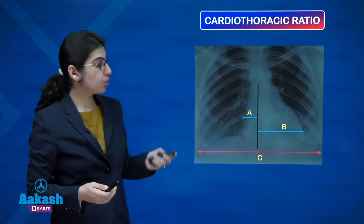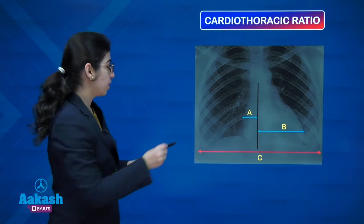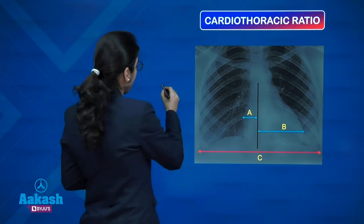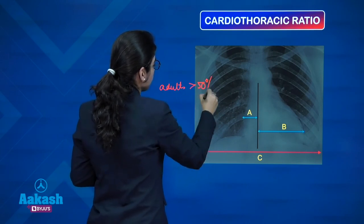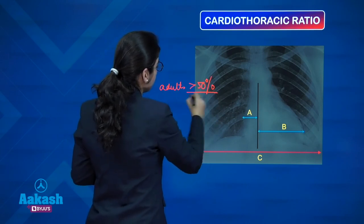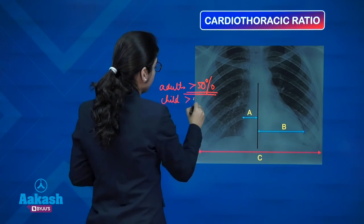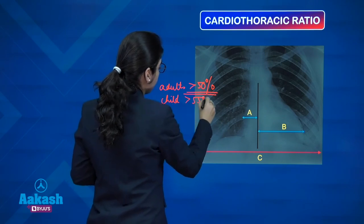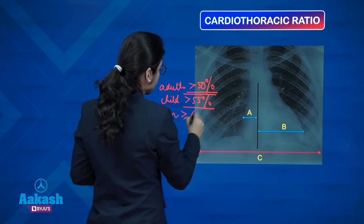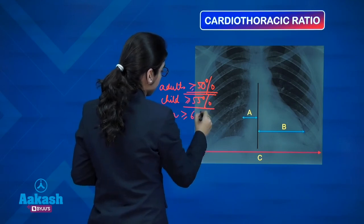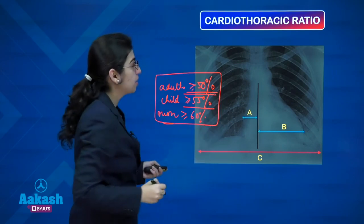The cardiothoracic ratio is very important. In adults, more than or equal to 50% is abnormal. In children, more than or equal to 55% is abnormal, and in neonates, more than or equal to 60% cardiothoracic ratio is considered abnormal.